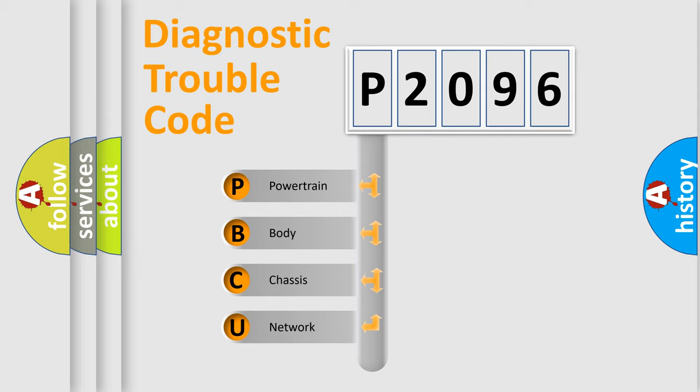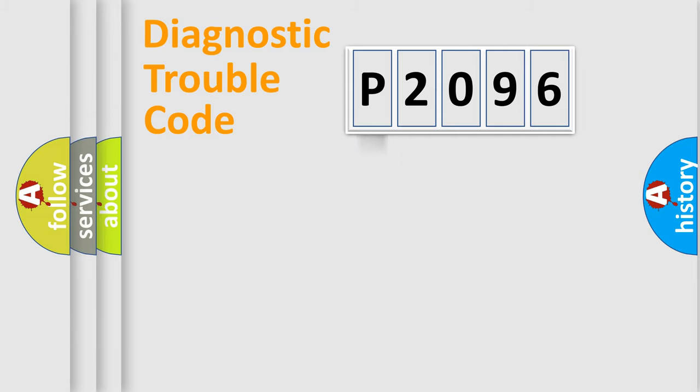We divide the electric system of automobile into four basic units: Powertrain, body, chassis, network. This distribution is defined in the first character code.